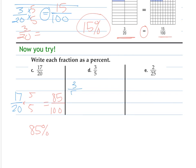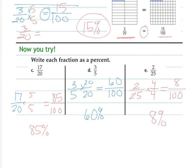3/5 - I want to make an equivalent fraction out of 100, so I multiply both top and bottom by 20. I get 60/100, which is the same as 60%. 2/25 - to get this to 100 as a denominator, I multiply the numerator and denominator by 4 for 8/100, which is 8%. Not too bad.